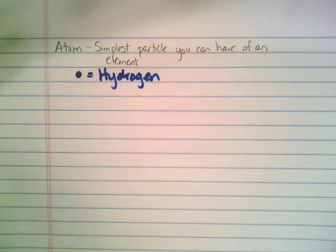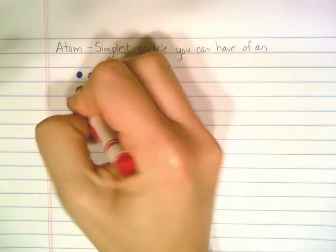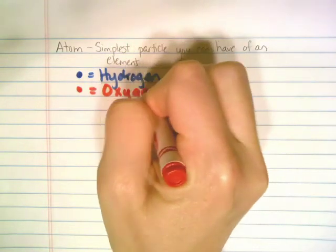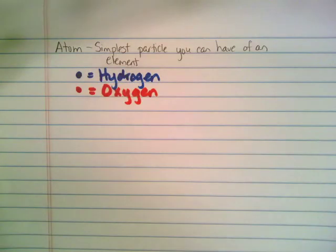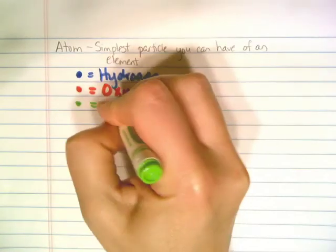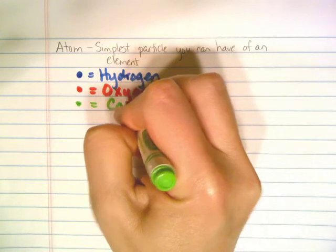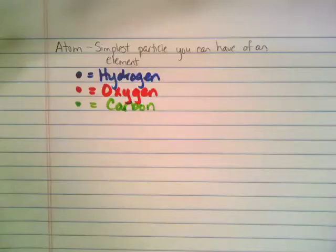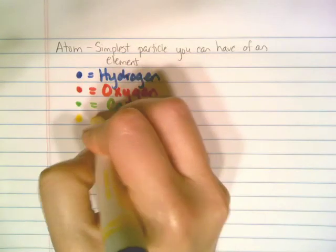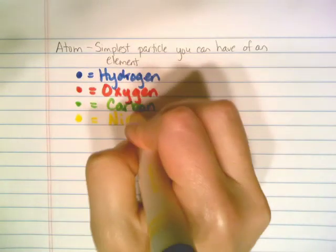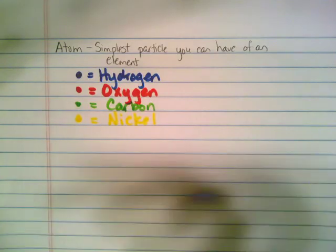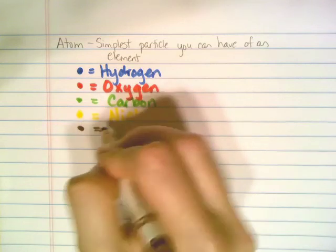Any time I draw a red dot, that's going to represent an atom of oxygen. Any time I draw a green dot, that's going to represent an atom of carbon. My yellow dots are going to represent atoms of nickel, and my brown dots are going to represent atoms of copper.